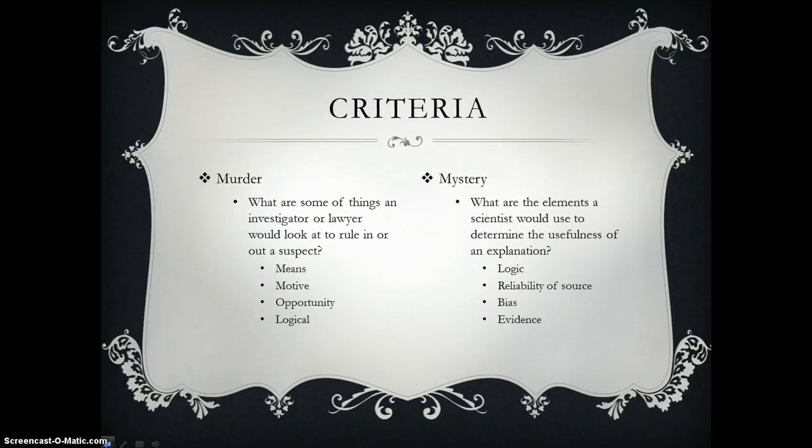So what kind of criteria might you be looking at? Remember, this is might. You can use other criteria. In a murder, what you're looking for are some of the things an investigator or a lawyer would look at to rule in or out a suspect: means, motive, opportunity. Is it logical that this person would choose to kill the victim or victims?